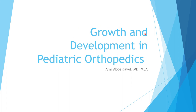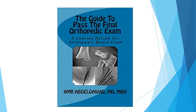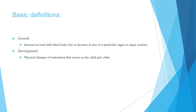This lecture is about growth and development, a very important topic in pediatric orthopedics. A good source you can use is the book 'The Guide to Pass the Final Orthopedic Exam.' Growth is increasing the size of the body, organ, organ system, or extremity. Development is the physiological change in maturation — so when a child starts sitting or walking, that's called development.